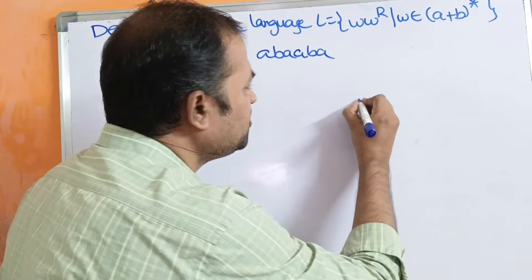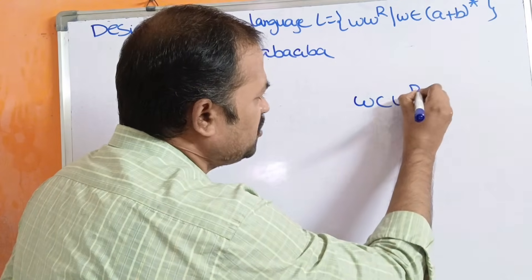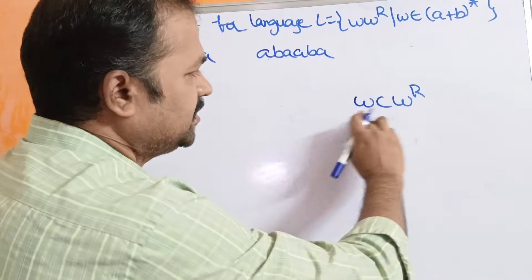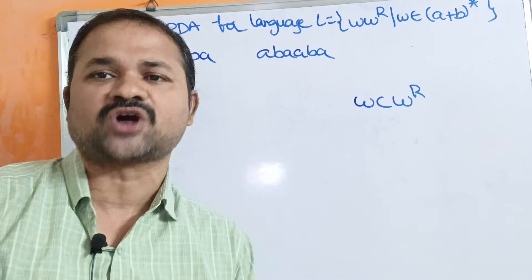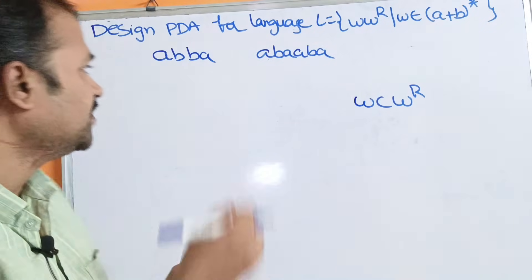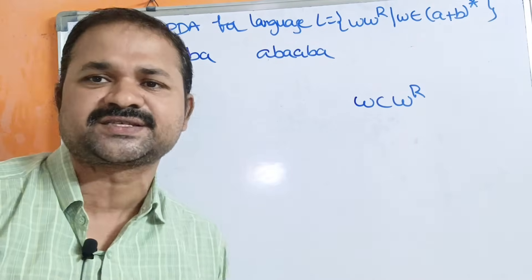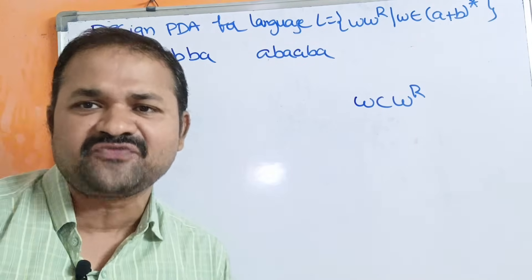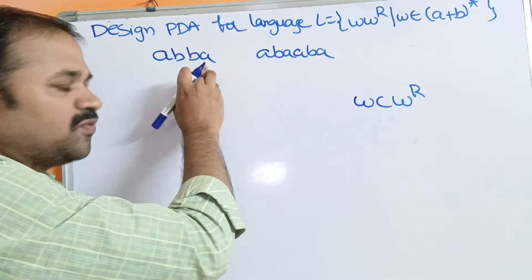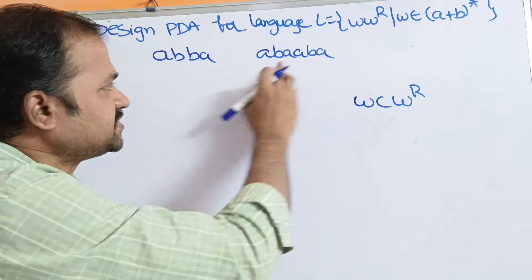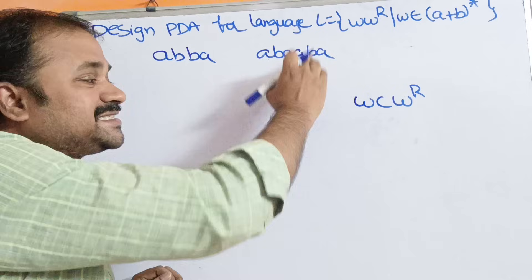We have already seen one example: WCW^R. In that example the length of the string is odd, whereas WW^R means the length of the string is even. For example ABBA has 4 characters, and ABAABA has 6 characters.